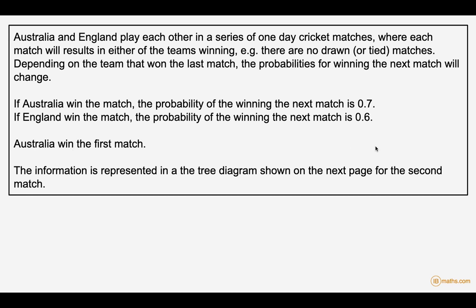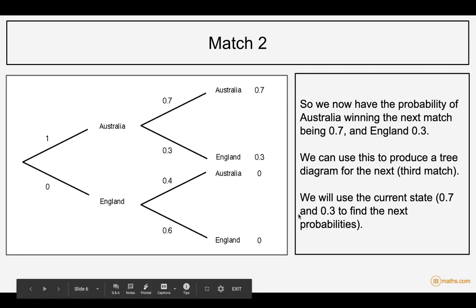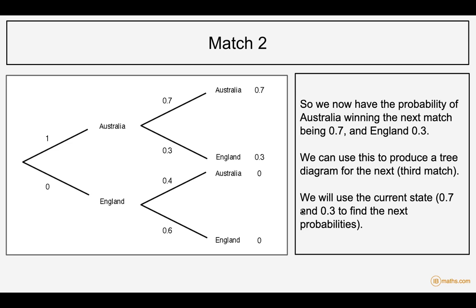We actually know Australia already won the match, but we're going to set up a tree diagram to begin with. The probability of Australia winning is 1 because we know they've won it. As they won it, there's a 0.7 chance of them winning and England 0.3. So we know that Australia win the next match with probability 0.7 and England 0.3.